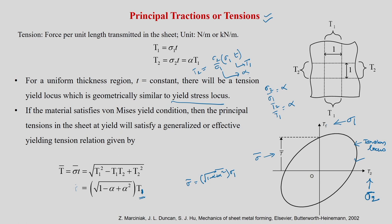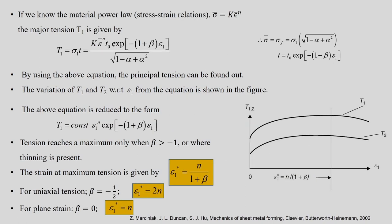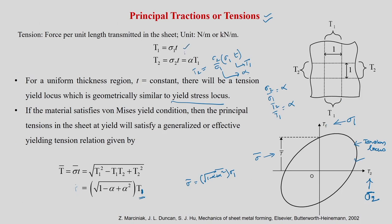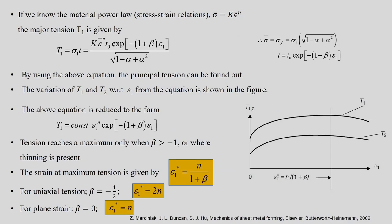This will be helpful for evaluating tensions. Using the equation t_1 equals sigma_1 times t, and applying the material law sigma_bar equals k times epsilon_bar to the power n, sigma_1 becomes sigma_bar squared divided by the square root of (1 minus alpha plus alpha squared), and t equals t_0 times exponential of minus (1 plus beta) times epsilon_1. Combining these gives the equation for t_1 as a function of material properties, beta, alpha, and epsilon_1.